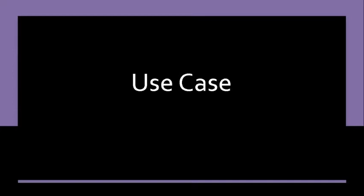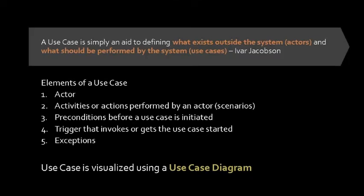Let's start by understanding the first tool in UML, which is what we call a use case. A use case is simply an aid to defining what exists outside the system — those are the actors — and what should be performed by the system. This definition is based on Ivar Jacobson.